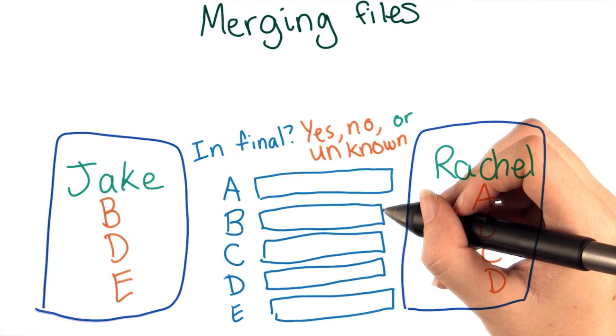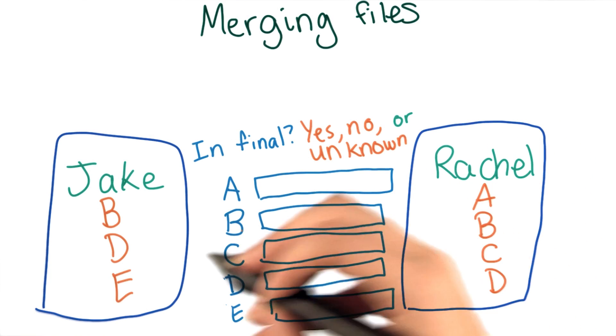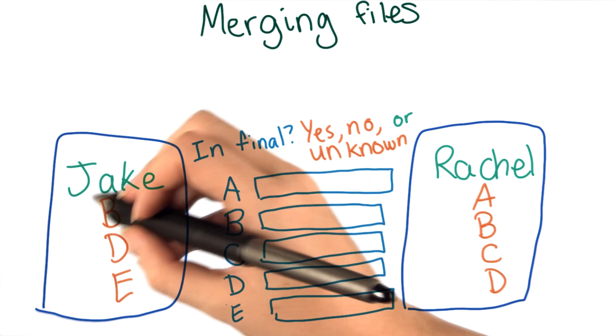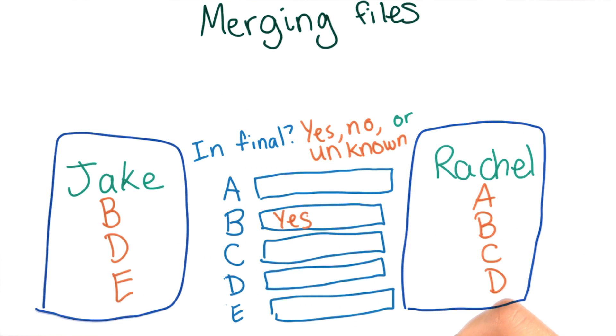When figuring out which line should be in the final file, first I'll look at the lines that are the same in both versions. Line B is in both, so it should be on the final list.